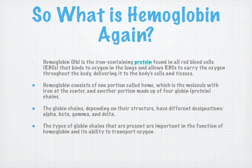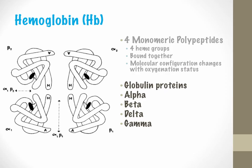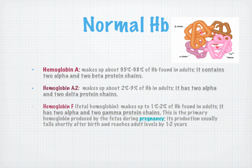Those globin chains — depending on their structure — have different designations: alpha, beta, gamma, and delta. The type of globin chain determines how it functions and its ability to transport oxygen. There are four monomeric polypeptides with four heme groups bound together. Normal hemoglobin is hemoglobin A, which makes up 95 to 98% of hemoglobin in adults — that's two alphas and two betas. Hemoglobin A2, two alphas and two deltas, makes up 2 to 3% in adults.